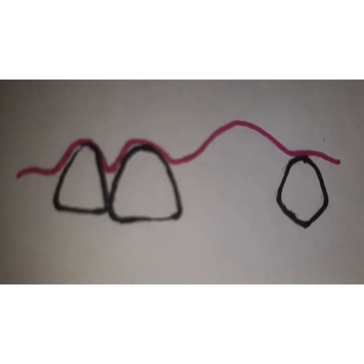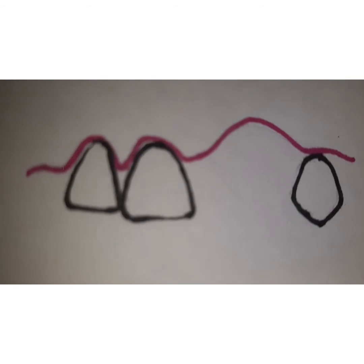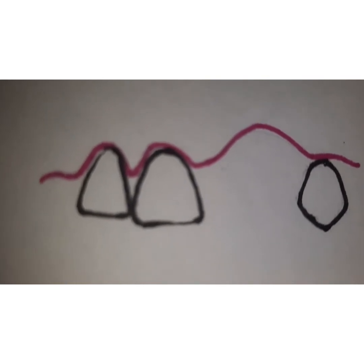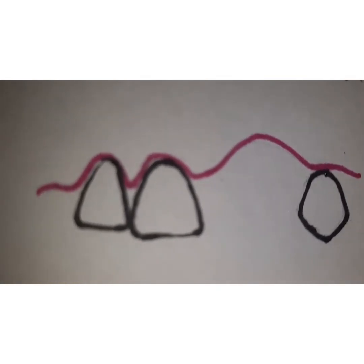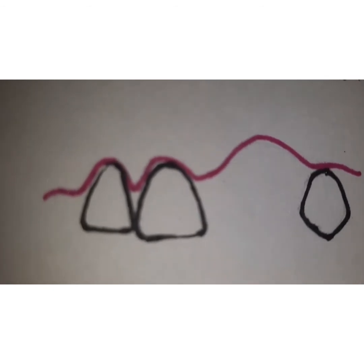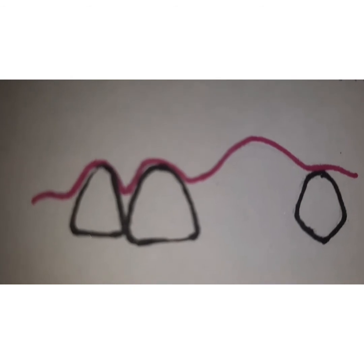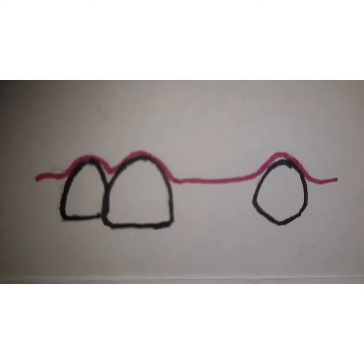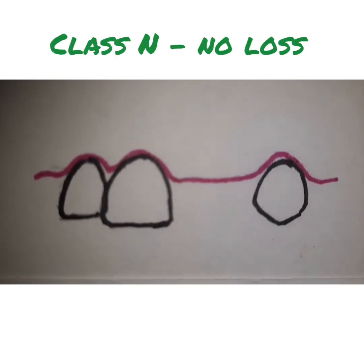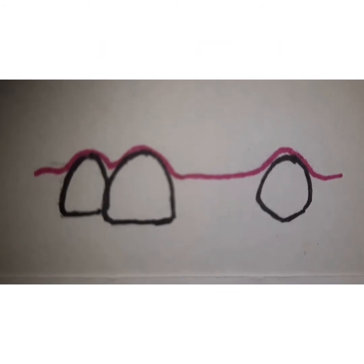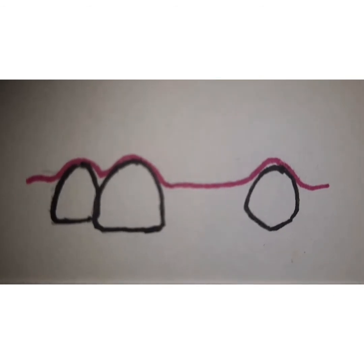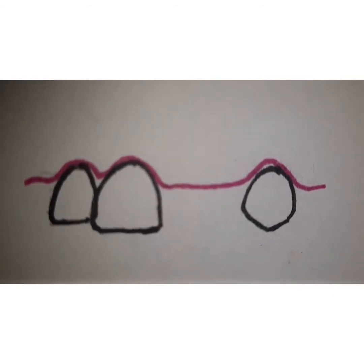Class 3 of Seibert's classification indicates there is loss of both faciolingual height and width — a combination defect where both dimensions are destroyed. Class N was added later and denotes no loss or minimal deformity of the ridge.